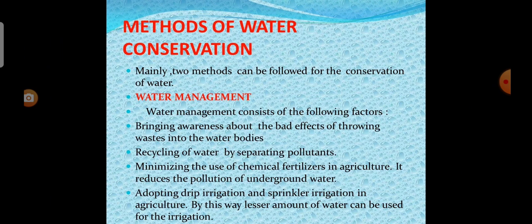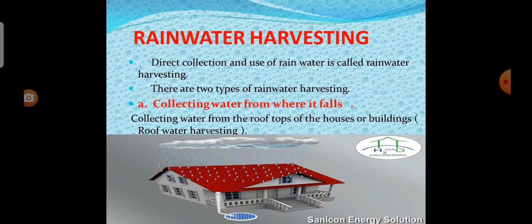Now we will see the methods used for water conservation. Mainly two methods can be used for conservation of water. One is water management and another one is rainwater harvesting. Water management consists of some factors: bringing awareness about the bad effects of throwing waste into the water bodies, recycling of water by separating pollutants, minimizing the use of chemical fertilizers in agriculture to reduce pollution of underground water, controlling deforestation, and adapting drip irrigation and sprinkler irrigation in agriculture. By this way, lesser amount of water can be used for irrigation.